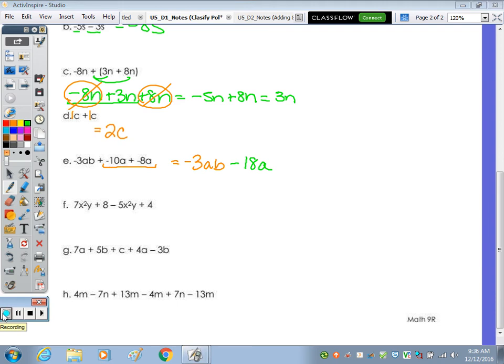In f, we have an x squared y term and another x squared y term. And 7 minus 5 is 2, keeping the x squared y. And then 8 plus 4 is 12.